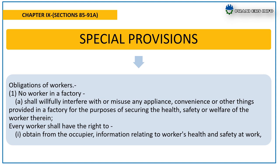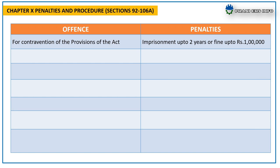Chapter 9, Special Provisions, covers sections 85 to 91A and focuses on obligations of workers. No worker in a factory shall willfully interfere with or misuse any appliance, convenience or other things provided in the factory for the purposes of securing the health, safety or welfare of workers therein. Every worker shall have the right to obtain from the occupier information relating to workers' health and safety at work.